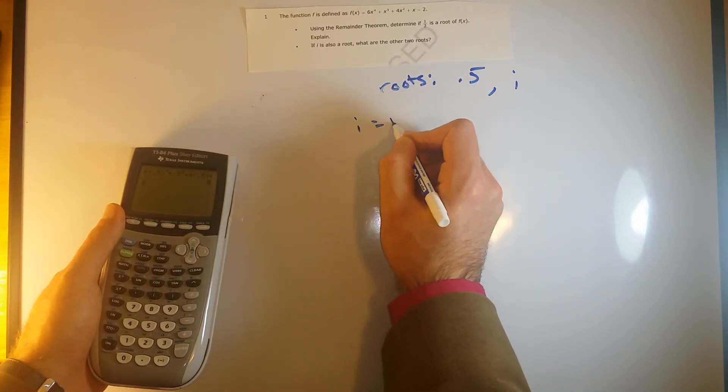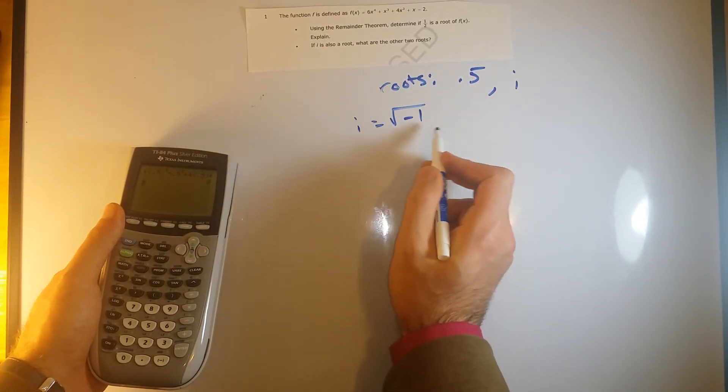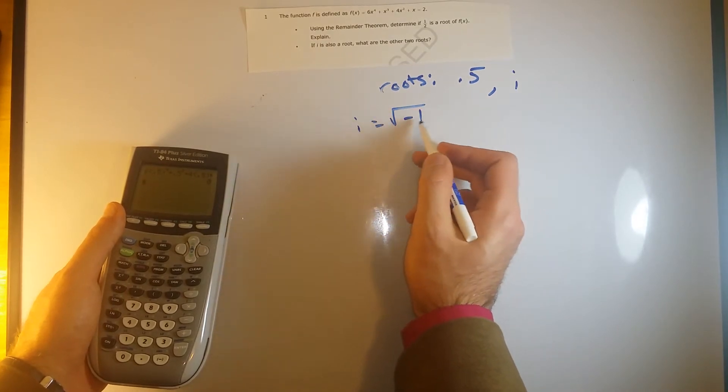So i, remember, is just means the square root of negative 1. So if we have the square root of negative 1 as a root, that means we're also going to have to have negative i is going to have to be a root.